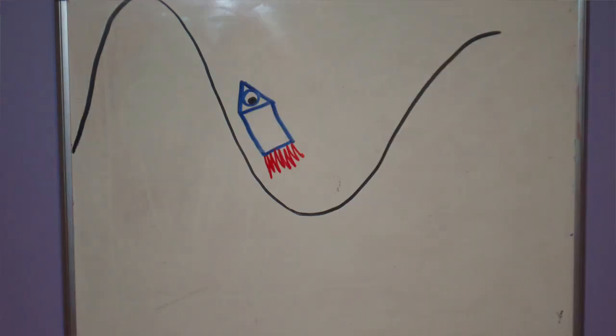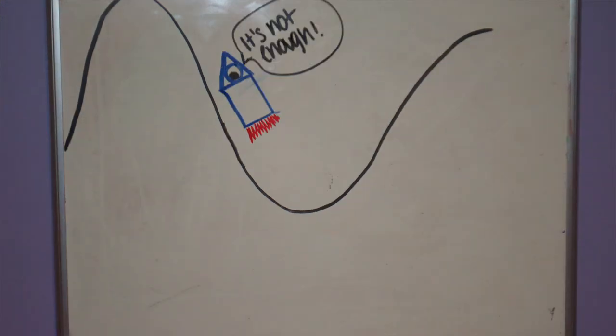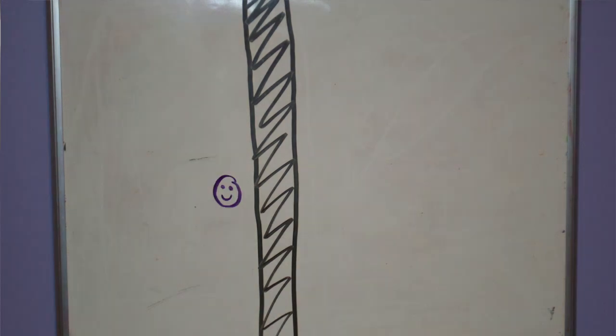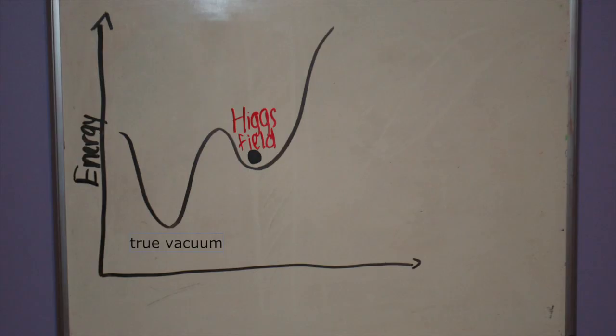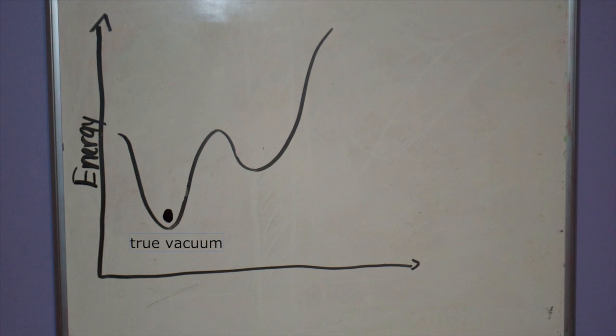Unfortunately, there's another way for the Higgs field to descend towards a true vacuum. Quantum tunneling is when a particle passes through a barrier even though it physically shouldn't really be able to. For the Higgs field, it looks something like this. The quantum tunneling of the Higgs field will cause the unpredictable death of the universe.